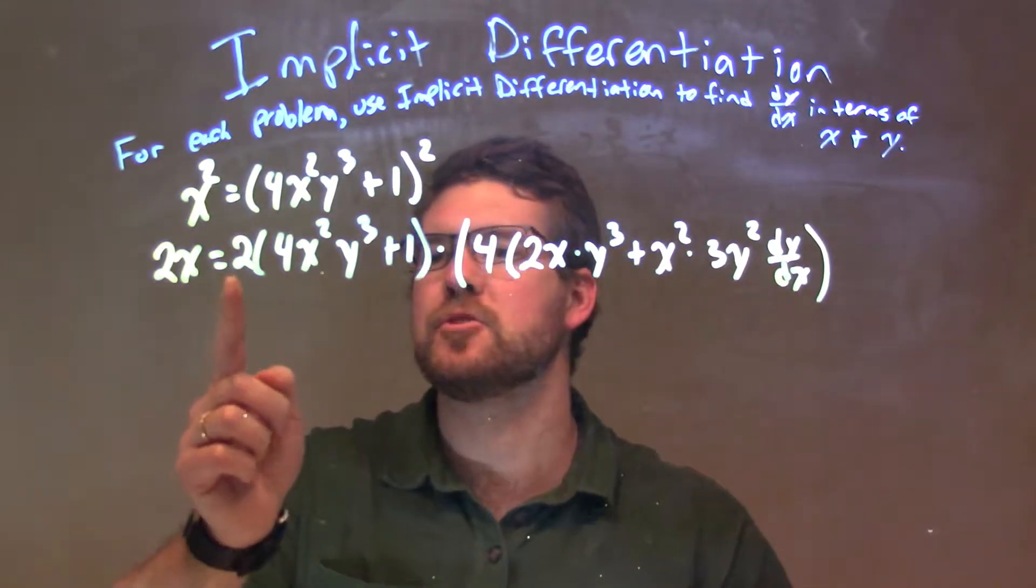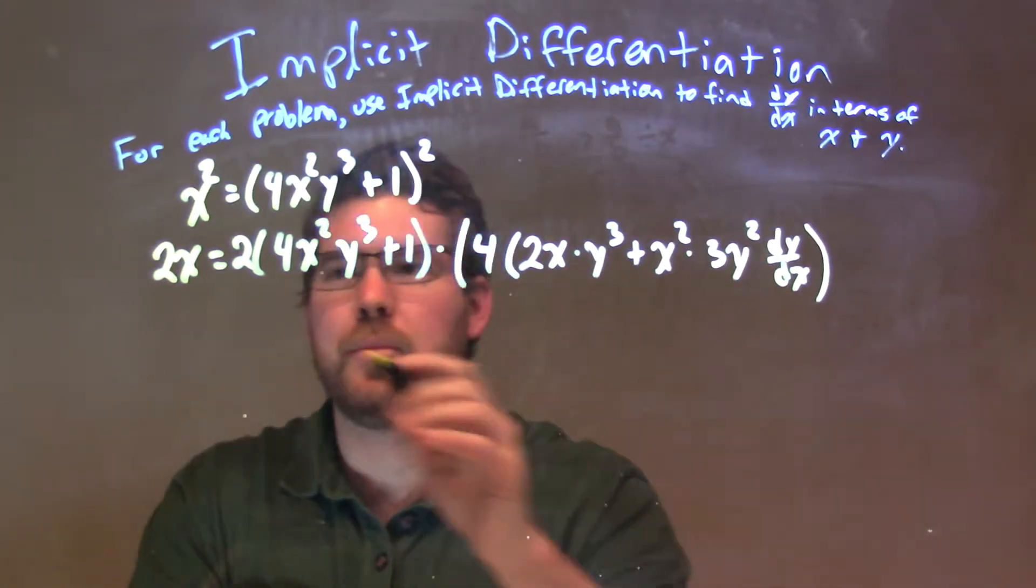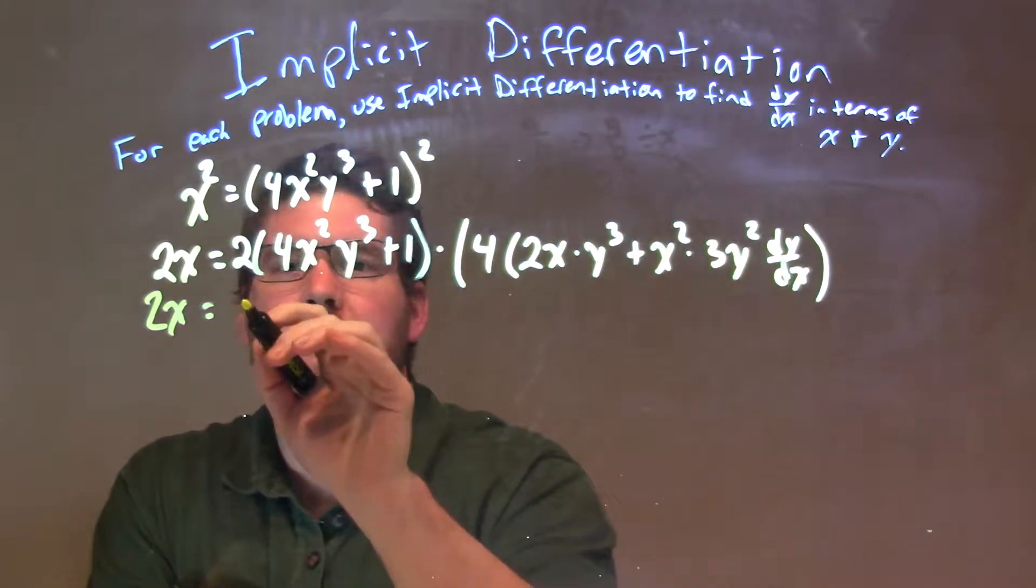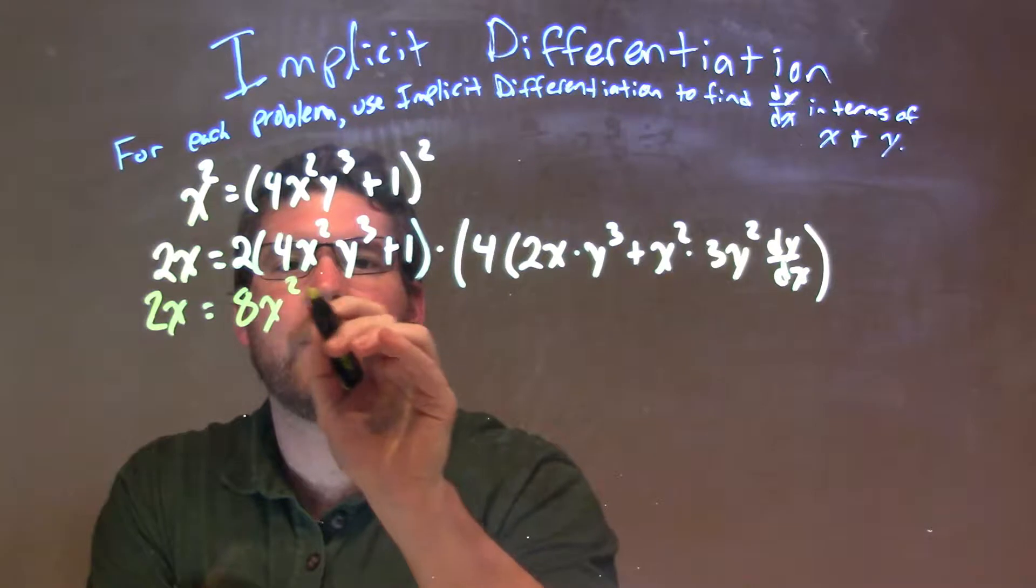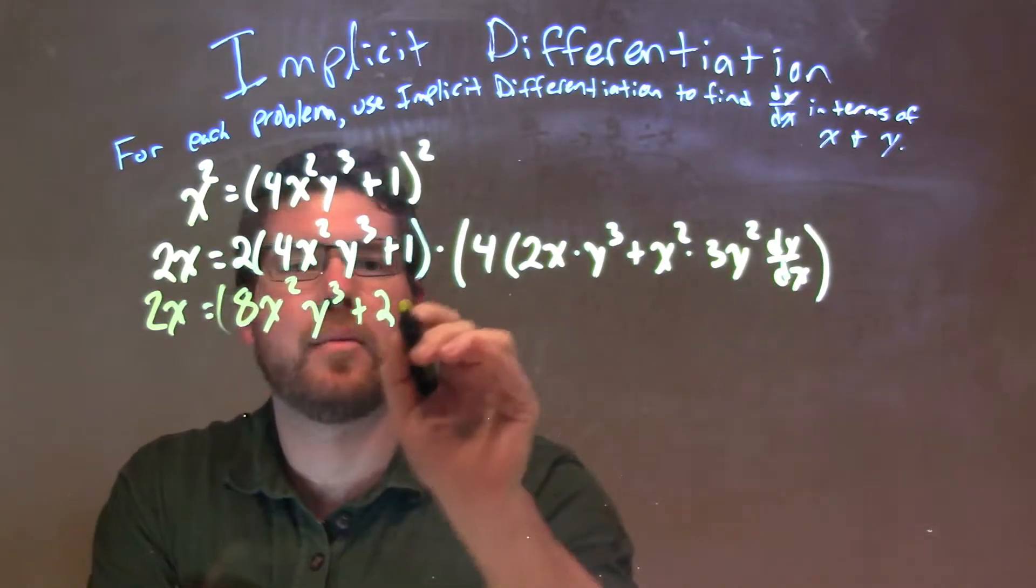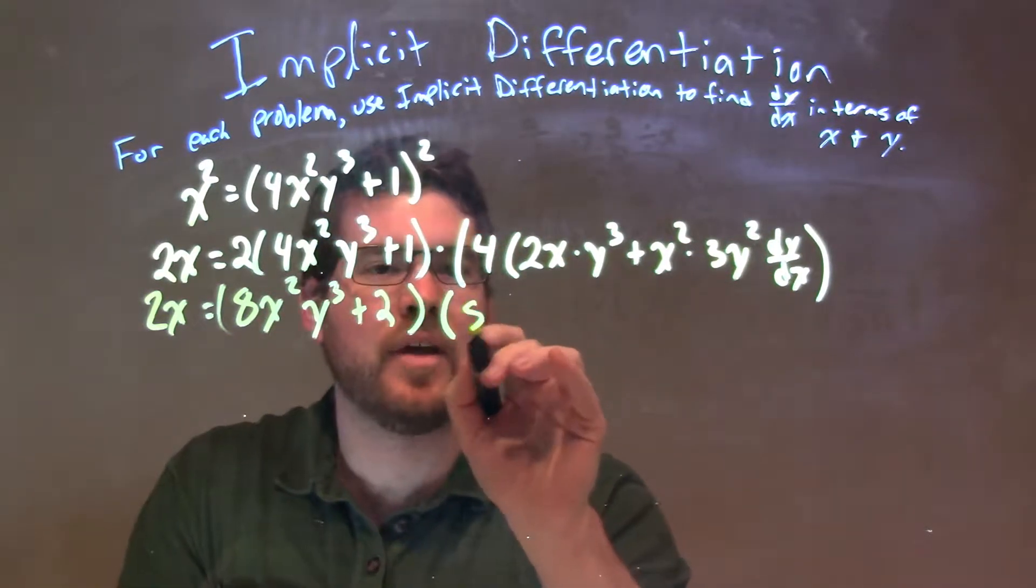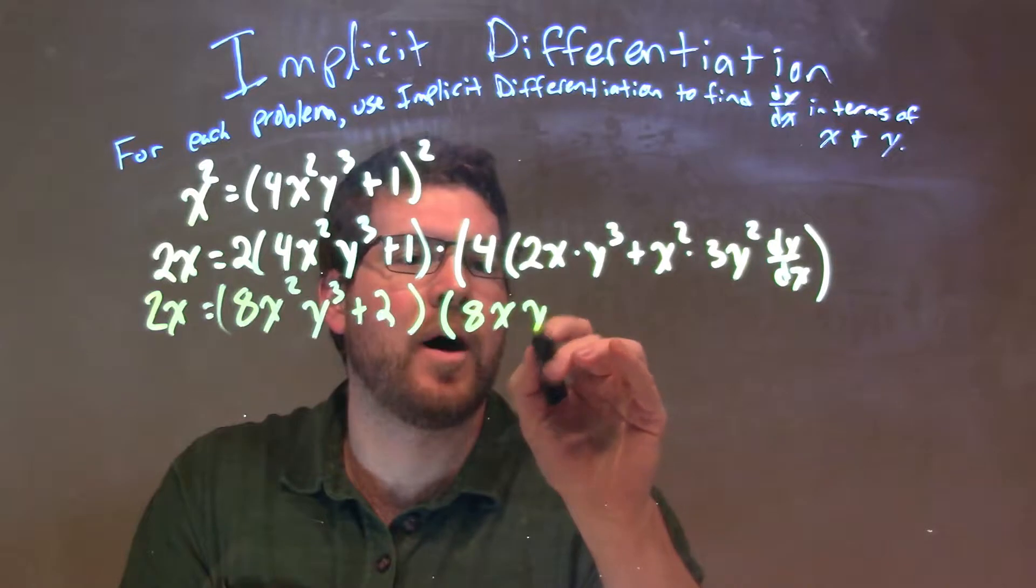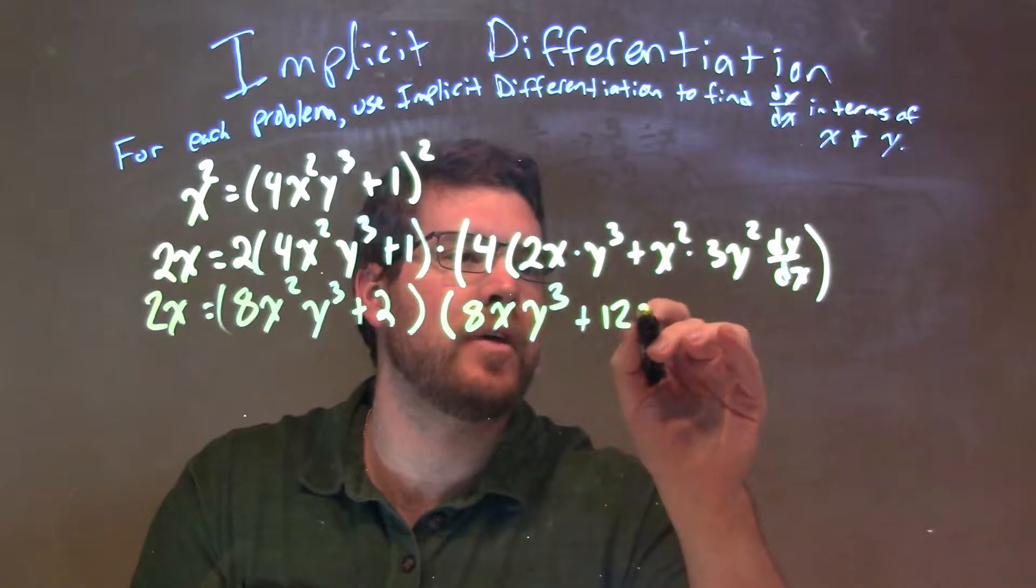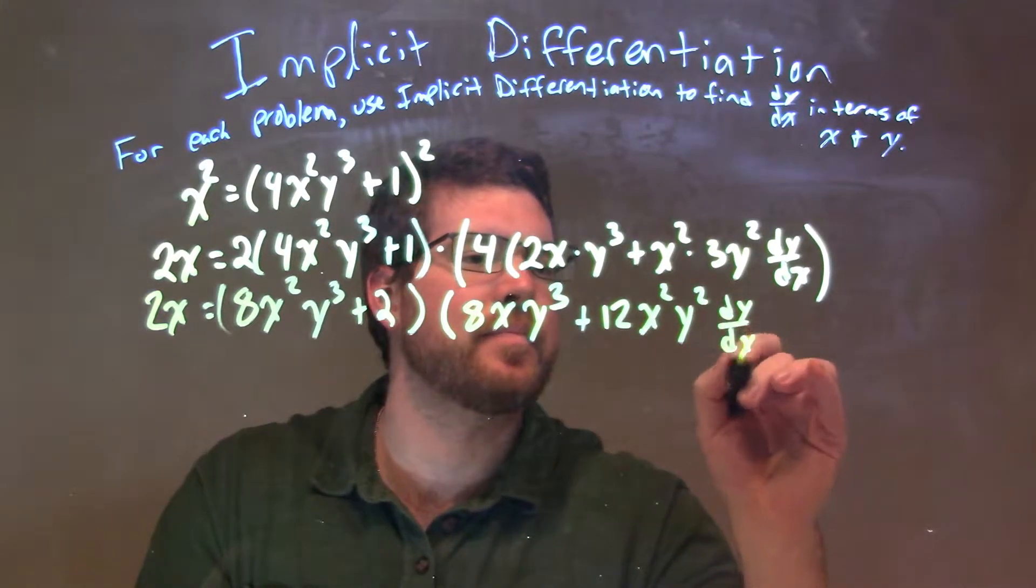So, what I'm going to do is distribute the 2 to both parts here, and the same thing with this 4. Let's distribute that out. So we have 2x is equal to, multiplying that out, I have 8x squared y to the third plus 2x. Distribute the 4 across, 4 times 2 is 8, so we have 8xy to the third plus 12x squared y squared dy/dx.